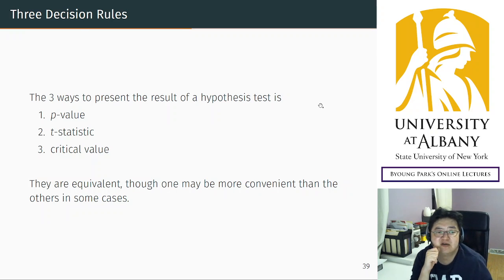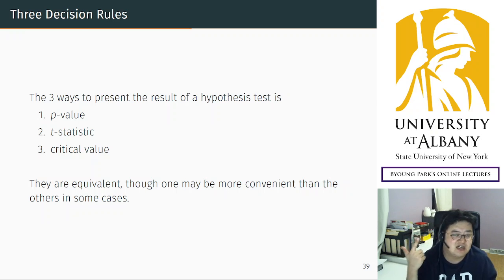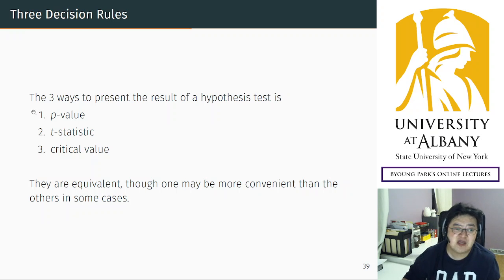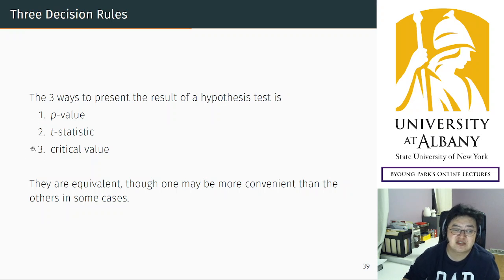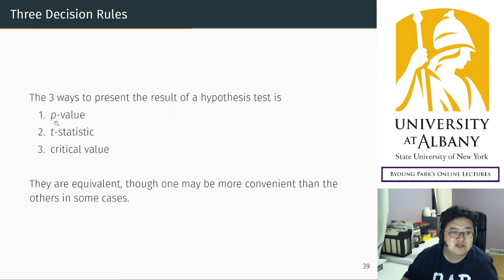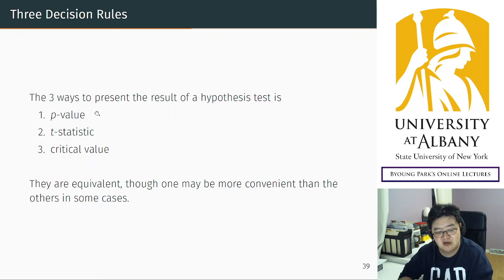The three ways to present the result are p-value, t-statistic, and critical value. P-value and t-statistic are what we used earlier, and critical value is the only new concept here. These three ways have different names and different scales, but they are mathematically equivalent. Whether you decide to reject using the p-value should give the same result as deciding based on the t-statistic, because both are calculated from the same data, so the rejection result should be the same.